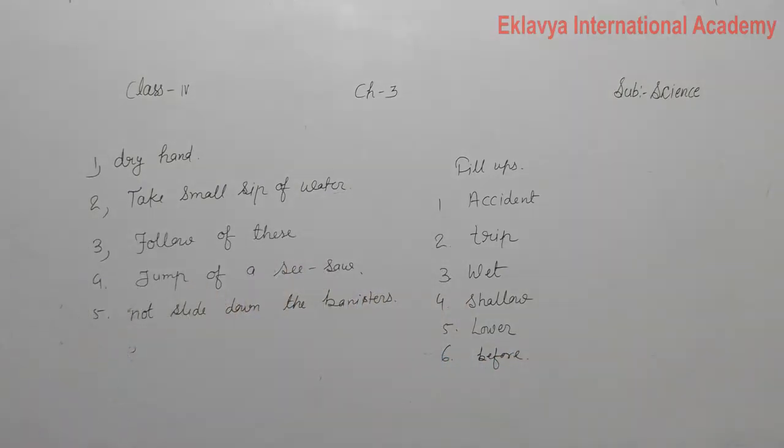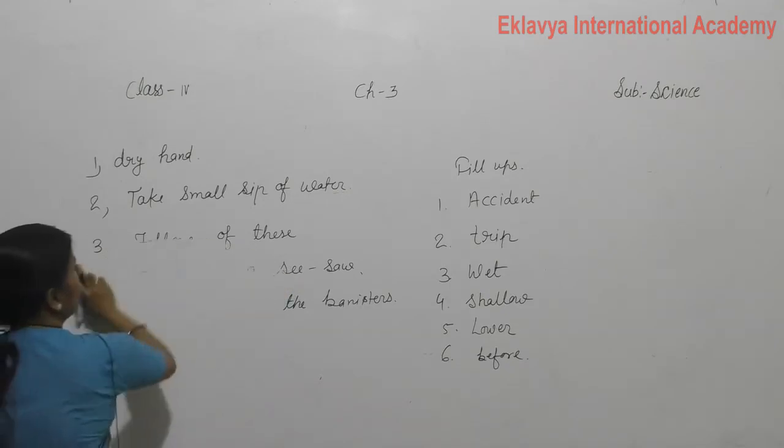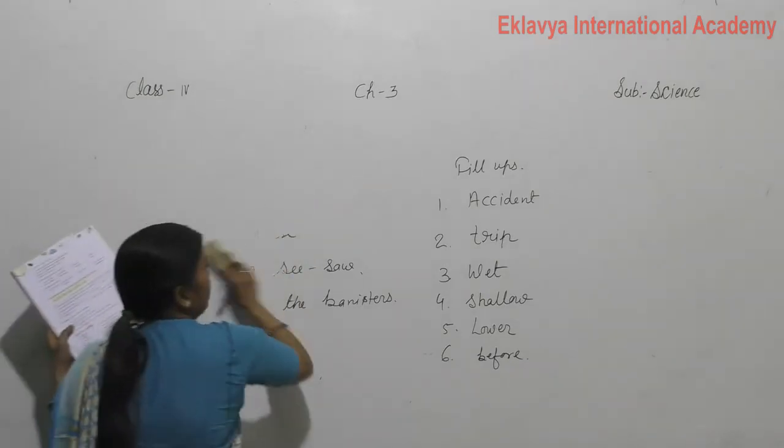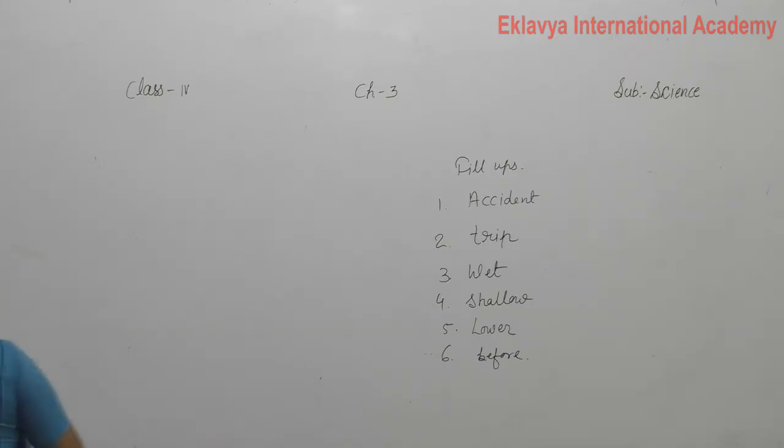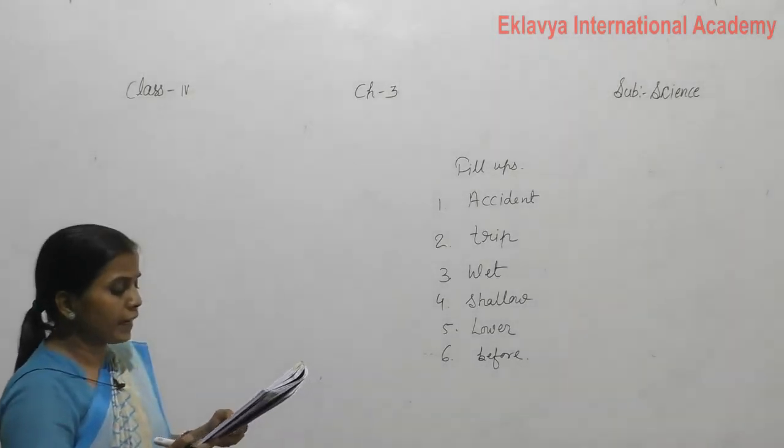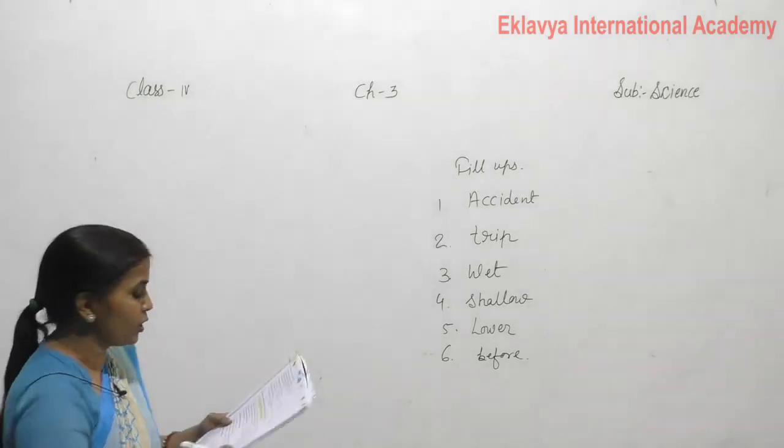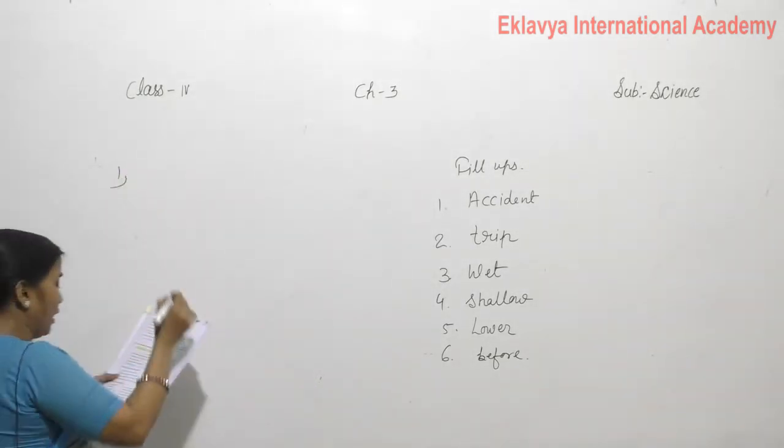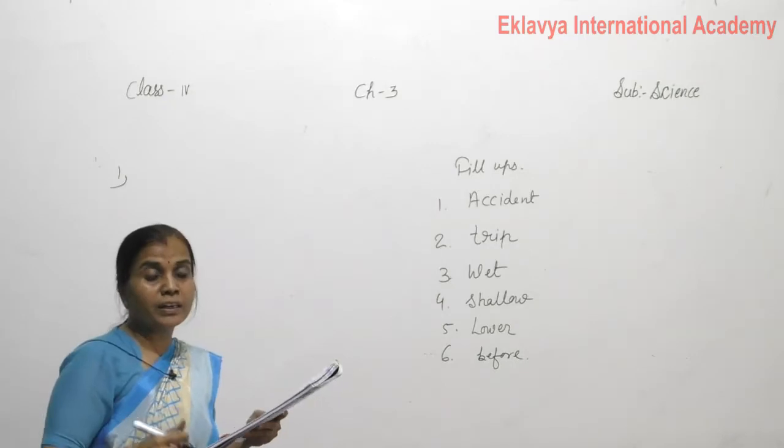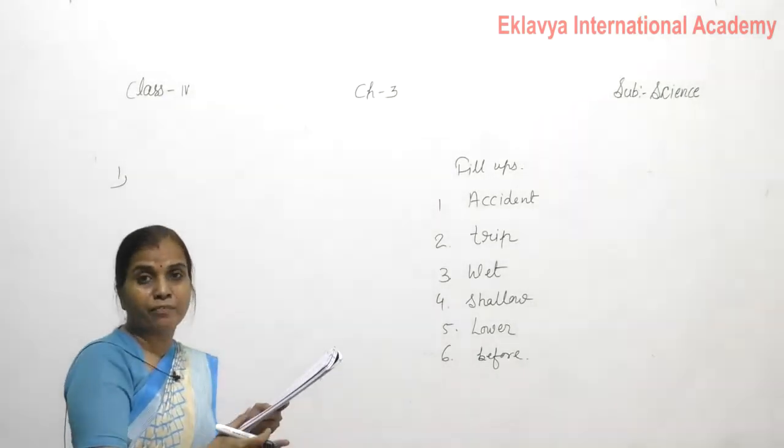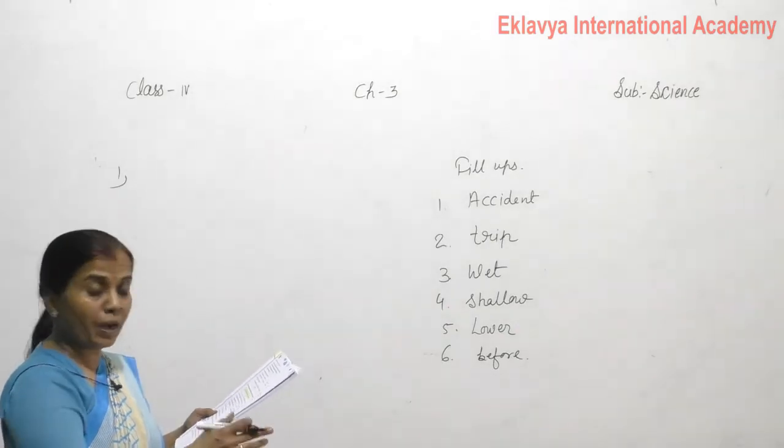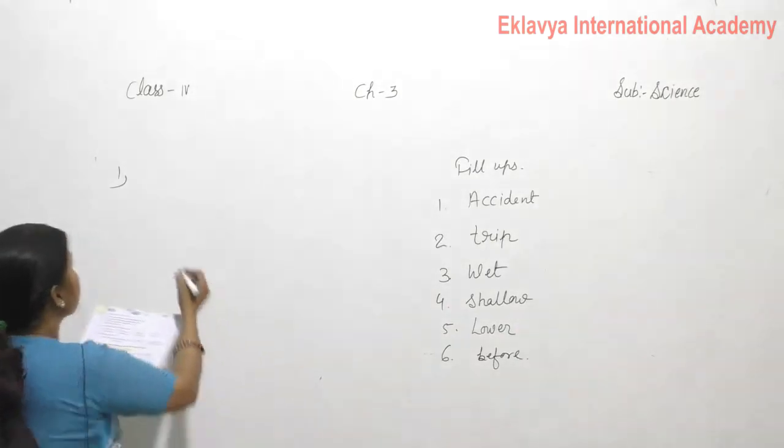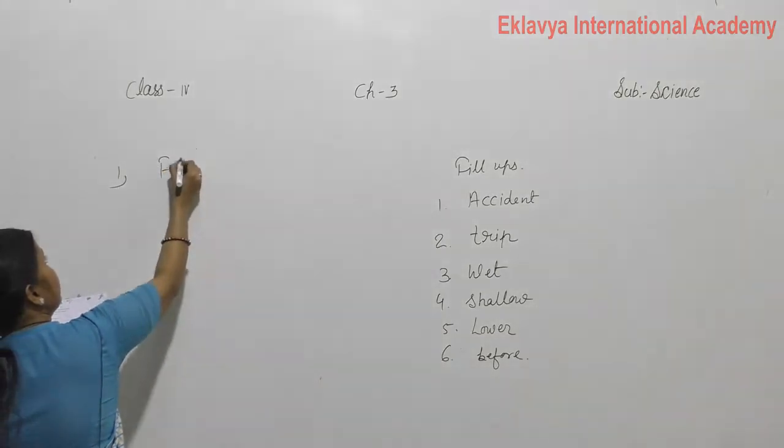Question three. Write T for true and F for false. First is we should run on a wet floor. If the floor is wet, we should not run on it. This is a false statement.